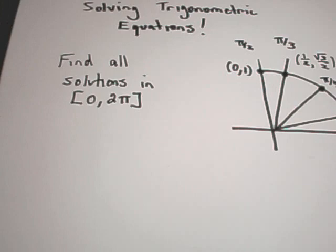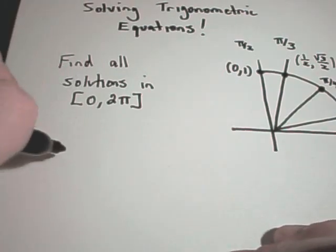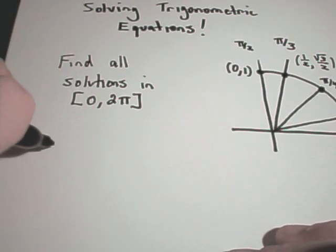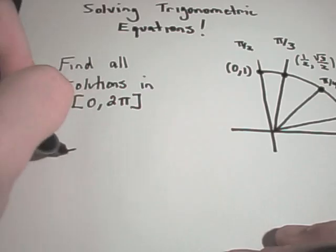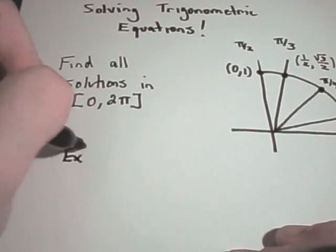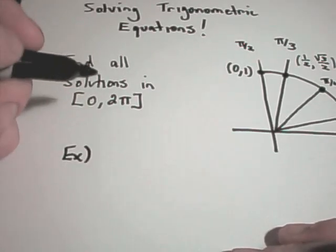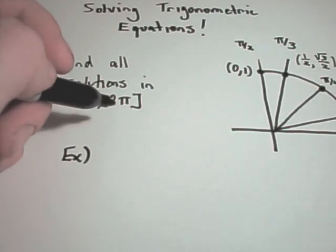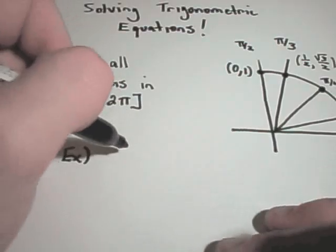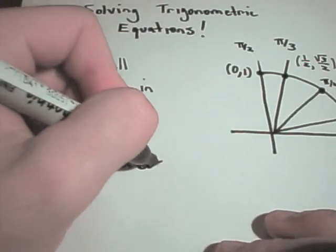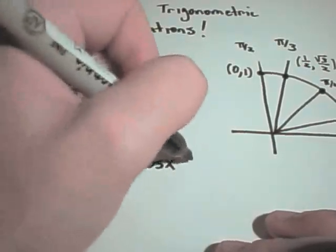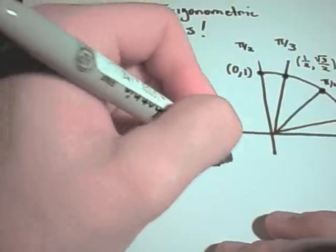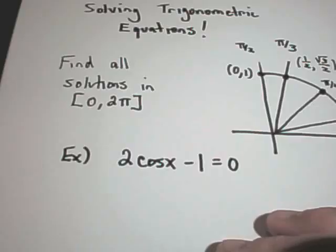So let's solve a couple of these. As our first example, let's solve 2cos(x) − 1 = 0.